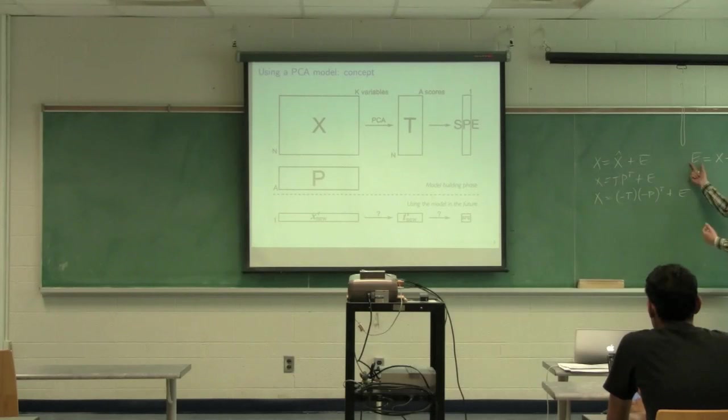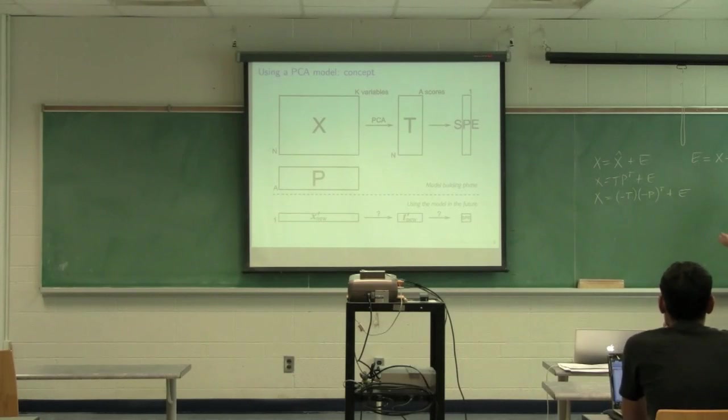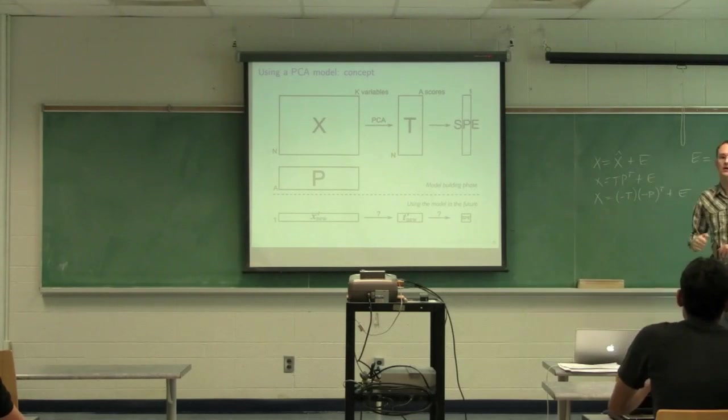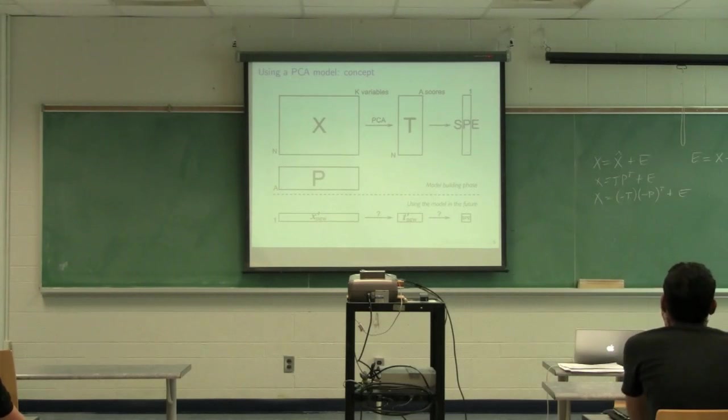So x hat represents the projection onto the plane of x. The error matrix E represents the distance off the plane. The errors represent the residuals and then we take those residuals, and within each row in the residual matrix, we calculate the sum of squares, which is e_i transpose e_i, and that is equal to the squared prediction error. So within a row, we can calculate SPE for each row. That's simply the distance off the plane from the projection. So that's when we build the model.